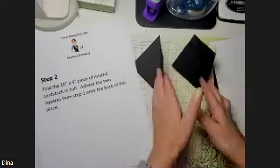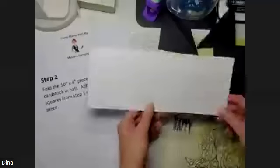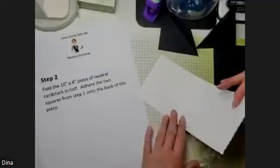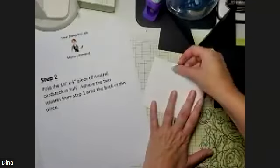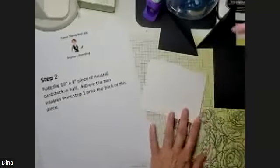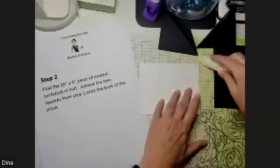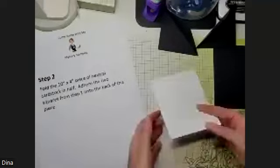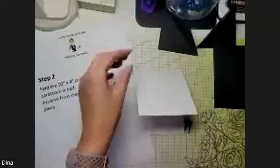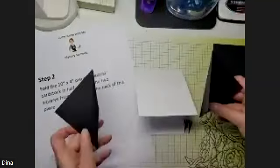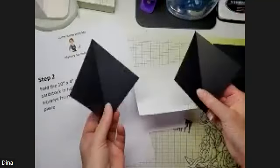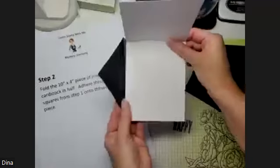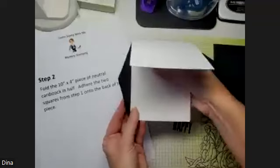All right Vic, you caught up? Yes. Now what you're going to do, you're going to set those aside for a minute. You're going to take your 10 inch by 4 inch piece of white, and you're going to fold it in half. You can use your bone folder. Now you're going to pull back these two folded squares or scored squares, and they are going to be attached to the back of this card that you just folded.